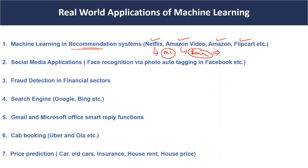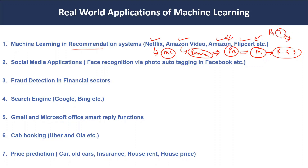On that basis they provide suggestions. Similarly, in Amazon, whenever you purchase any product they will suggest related products — for example, if you buy milk, they might suggest bread and similar items. Same with Flipkart: if you buy clothes like trousers, they can suggest the same type of trousers with similar color, size, brand, or category.